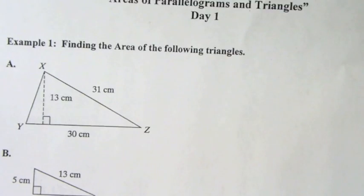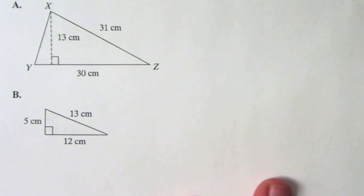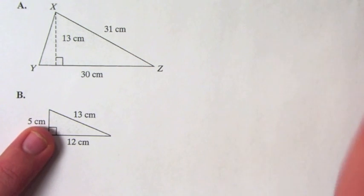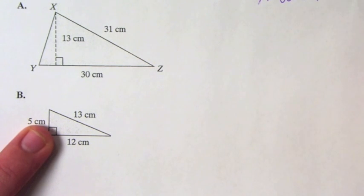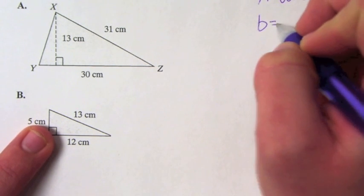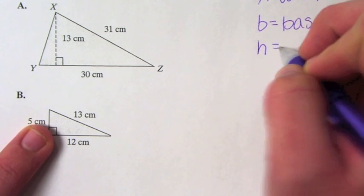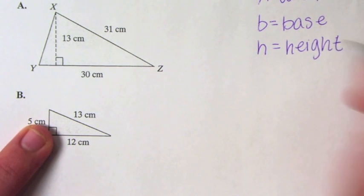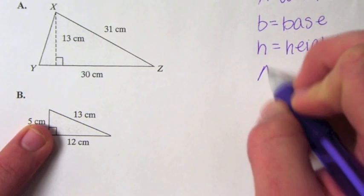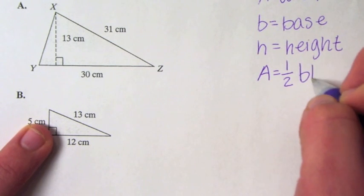Alright, here we go with chapter 10. Section 1 is all about area of parallelograms and triangles. We're going to start with the area of a triangle. A is going to stand for area, B is going to stand for the base, and H is going to stand for the height. The area of a triangle, which some of you may know, is 1/2 base times height.